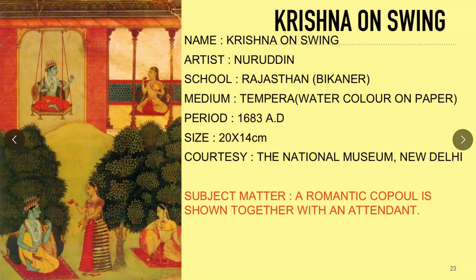This is a beautiful painting from the Bikaner school. The name of the painting is Krishna on Swing. The artist is Nuruddin, a Muslim artist. The school is Bikaner, the period is circa 1683 AD, and the size is 20 by 14 cm. This painting is in the National Museum, New Delhi.